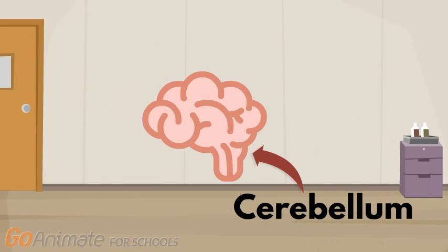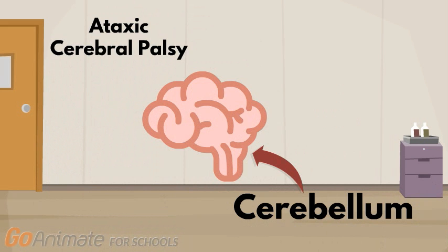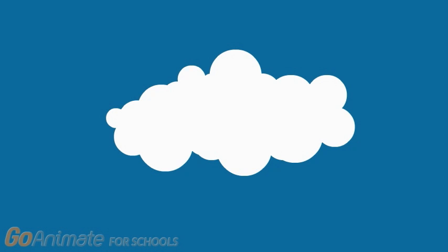Damage to another part of the brain called the cerebellum can lead to poor balance and coordination. This type is called ataxic cerebral palsy.